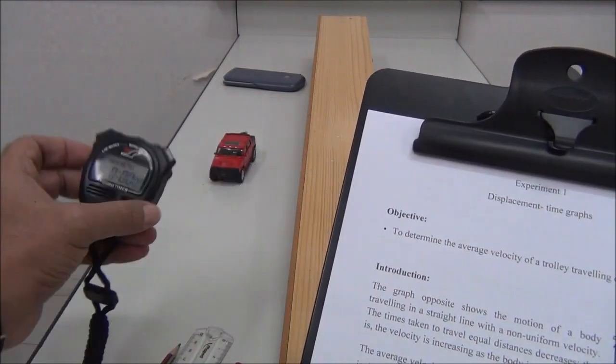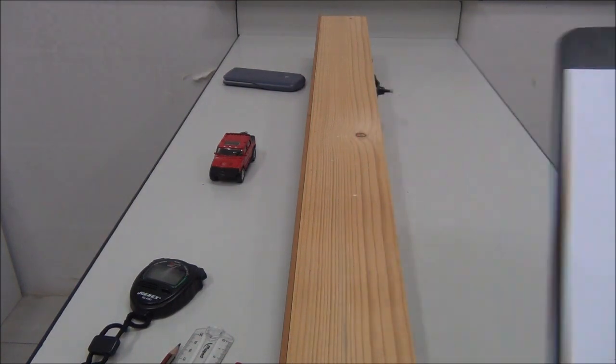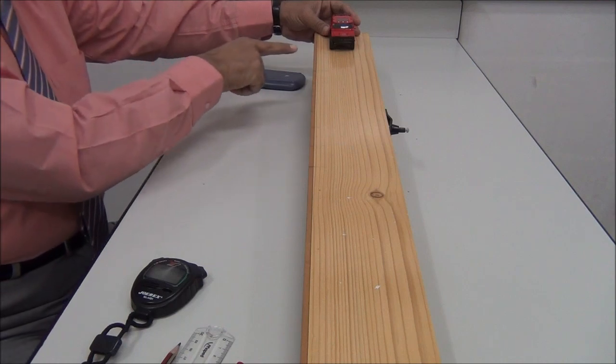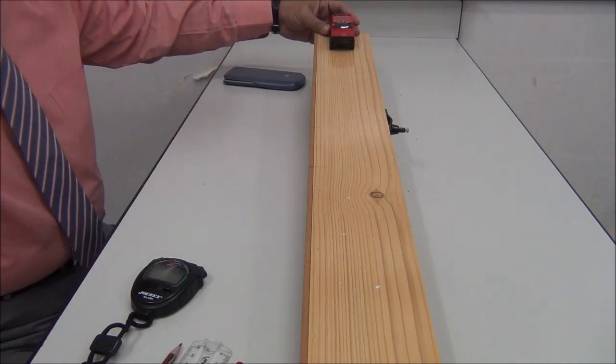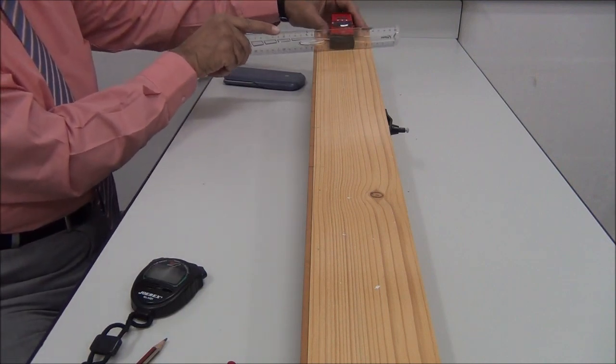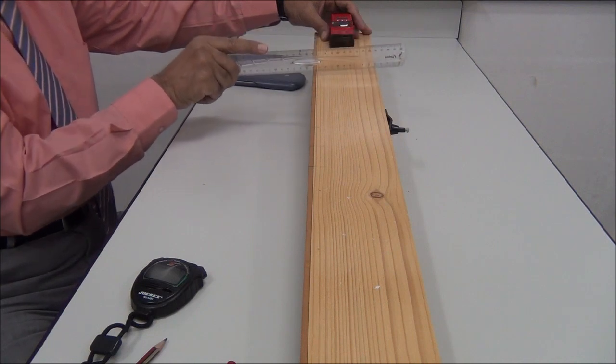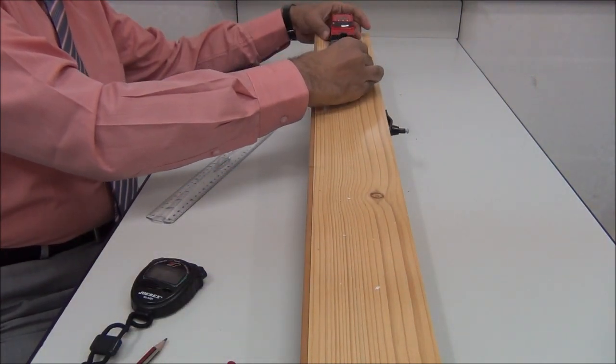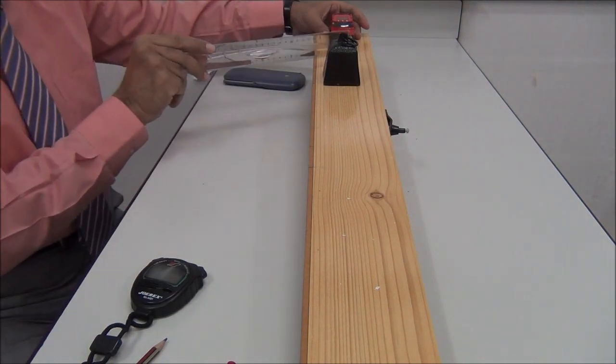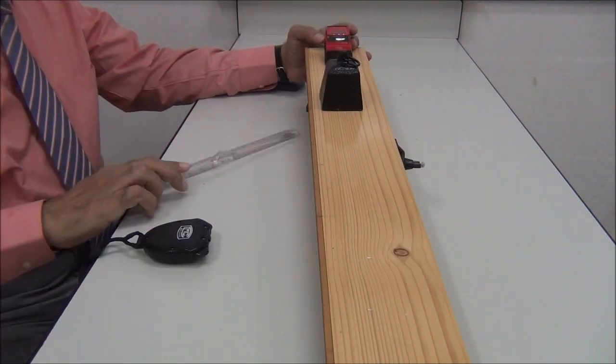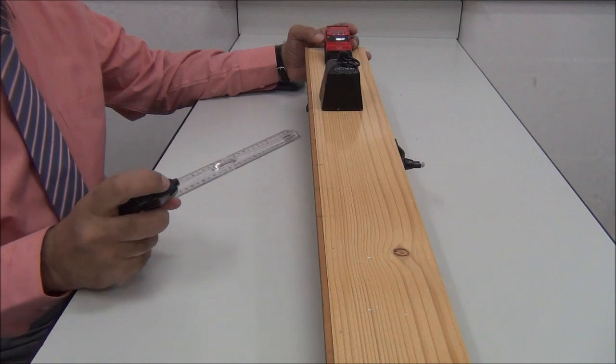Let's start. We put the trolley at 10 centimeters, we adjust it at 10 centimeters. Then after 10 centimeters, at 20 centimeters, we put that one. So the distance between the trolley and that mass is just 10 centimeters. Now we start the stopwatch, we adjust it to zero.